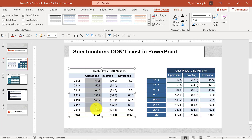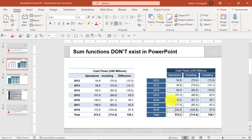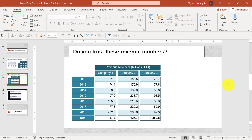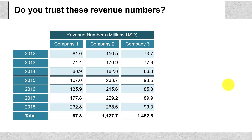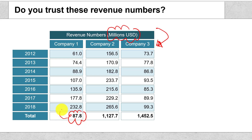If you have a table like this, you can just copy and paste the values into Excel. But what do you do if someone's built a graphic using rectangles? Here is a classic example of something you might face: would you trust these millions USD revenue numbers for these three companies? Hopefully your answer is no — right off the bat, you can see that this total is actually less than the numbers it's adding up.